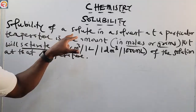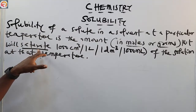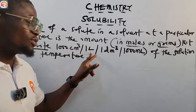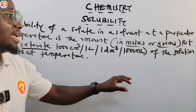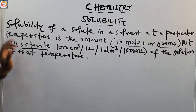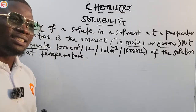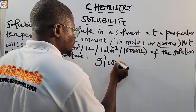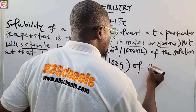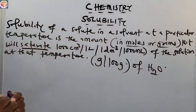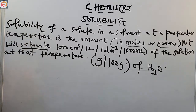Please know the definition — it is the amount in moles or grams that will saturate 1,000 cm³, which is the same as 1 liter, the same as 1 dm³, the same as 1,000 ml, of the solution at that temperature. Apart from gram per dm³ and mole per dm³, solubility also takes the form of gram per 100 grams of water.